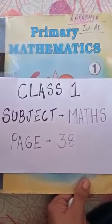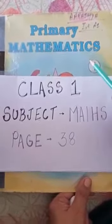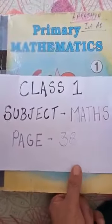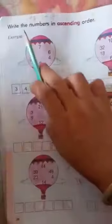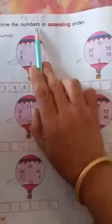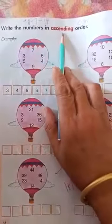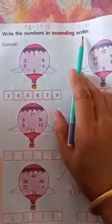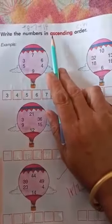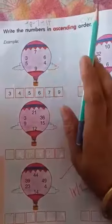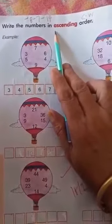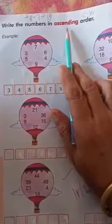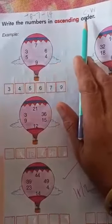Good morning students. Take out your maths book, page number 38. Write the numbers in ascending order. Ascending order means small to big — we start the number from small and then go to big numbers.